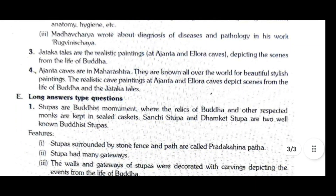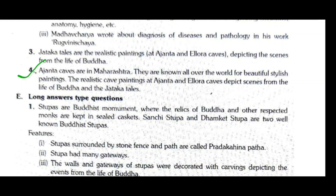Question three: What are the Jataka tales? Jataka tales are the realistic paintings at Ajanta and Ellora caves depicting scenes from the life of Buddha. Question four: Write a note on Ajanta caves. Ajanta caves are in Maharashtra and are known all over the world for their beautiful, stylistic paintings. The realistic cave paintings at Ajanta and Ellora depict scenes from the life of Buddha and the Jataka tales.